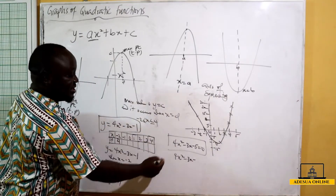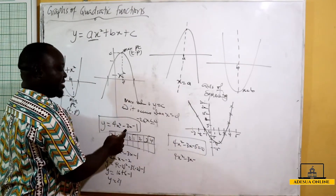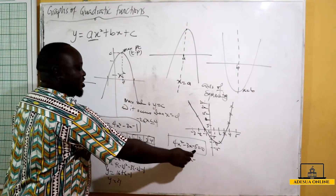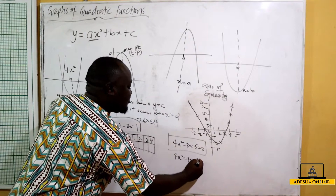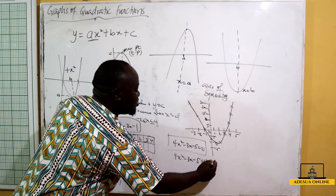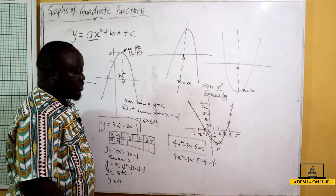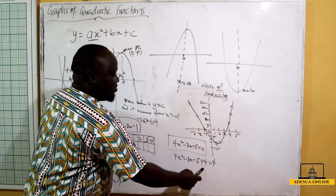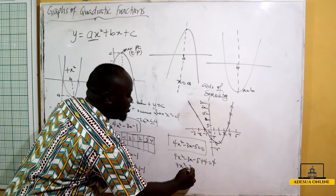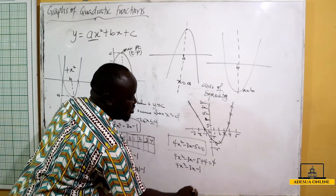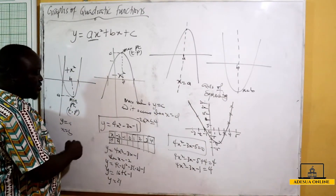We ask: what do we add to -5 to get -1? The answer is +4. So we rewrite the equation as 4x² - 3x - 5 + 4 = 0 + 4, which simplifies to 4x² - 3x - 1 = 4. Since 4x² - 3x - 1 equals y from our graph, this means y = 4.